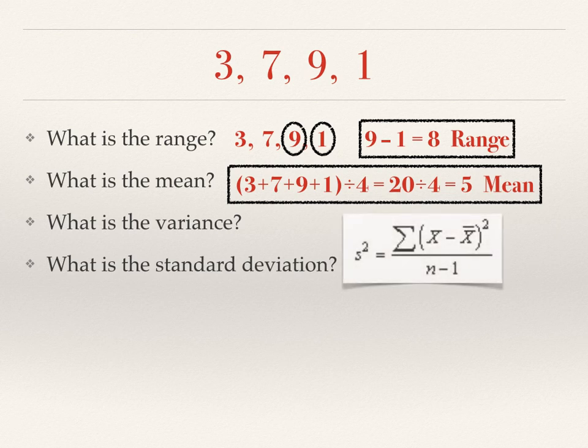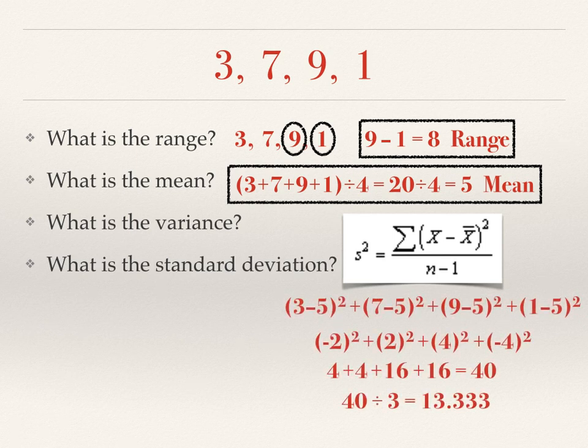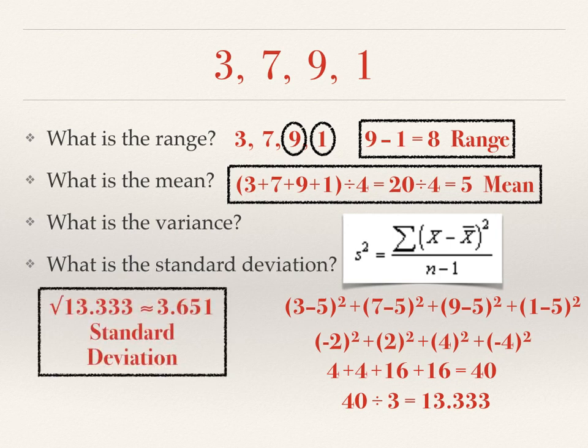Here's your formula for variance. And remember how we find variance. We take each individual data value, subtract off the mean, square it, and add those together. And then we simplify that. So our variance is approximately 13.333. Standard deviation is the square root of the variance. So the standard deviation is about 3.651.